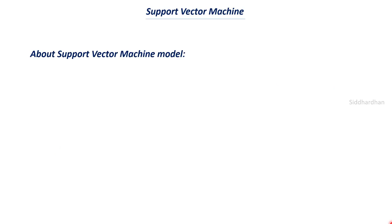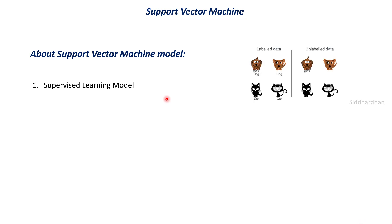First, let us discuss some basic things about a support vector machine model. It is an example of a supervised learning model, meaning these models require data as well as labels. For example, if we have images of dogs and cats and want to train a model to recognize which is which, we feed all the images to the model along with their labels — dog images labeled as dog and cat images labeled as cat. The supervised learning model then tries to find the relationship between the images and their respective labels.